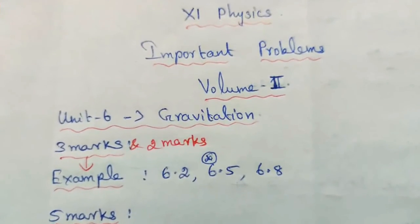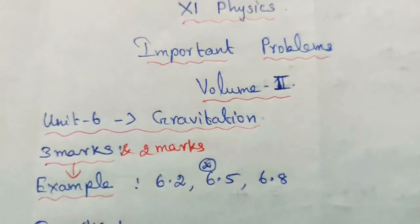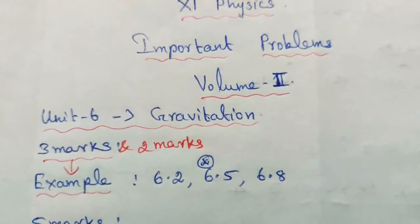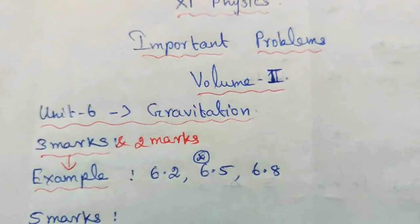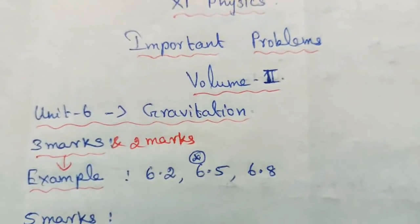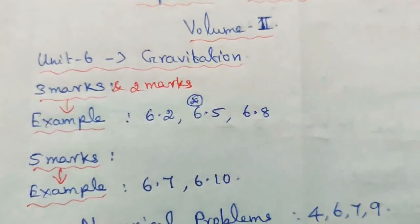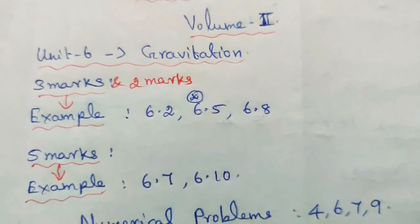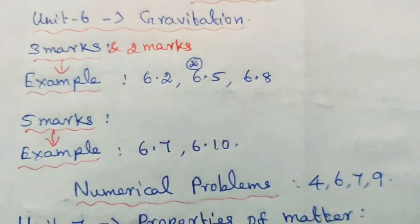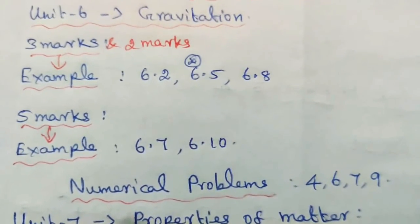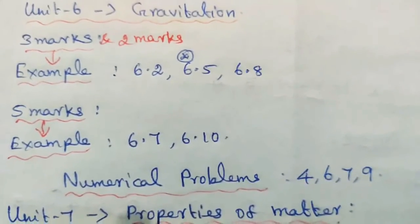Volume 2. Unit 6: Gravitation — 2 marks and 3 marks. Example problems: 6.2, 6.5, and 6.8. 5 marks example problems: 6.7 and 6.10. Numerical problems (book problems): 4, 6, 7, and 9.